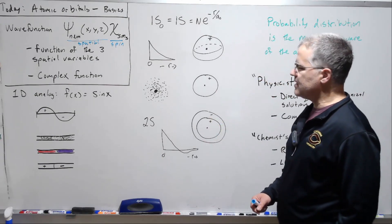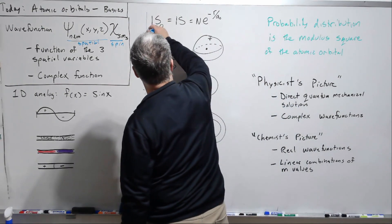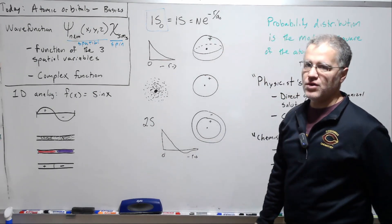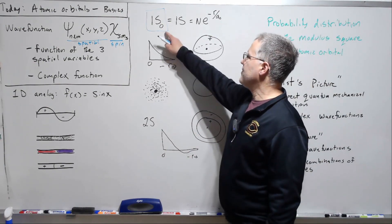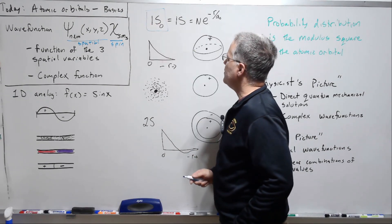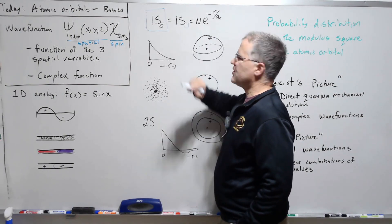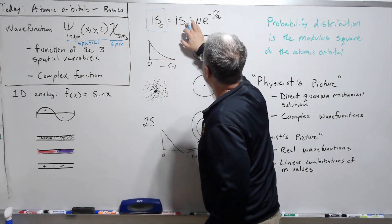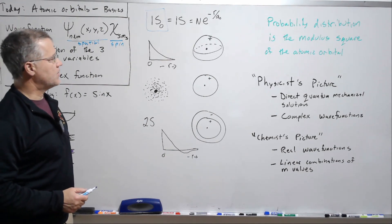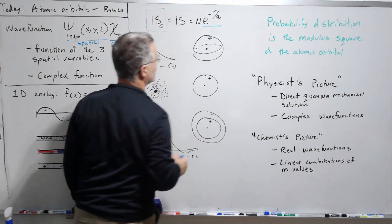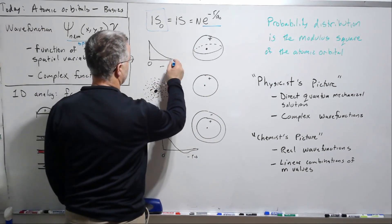Let's look at some of these wave functions — the very easiest one, the 1s. Now 1s means n equals 1. If n equals 1, then l can only be 0. And if l is 0, then m can only be 0. So technically we would call this the 1s0 spatial wave function, but with s's this is always going to be 0, so we drop it. This is proportional to a decaying exponential function, e to the minus r, and it's independent of the angles in space.